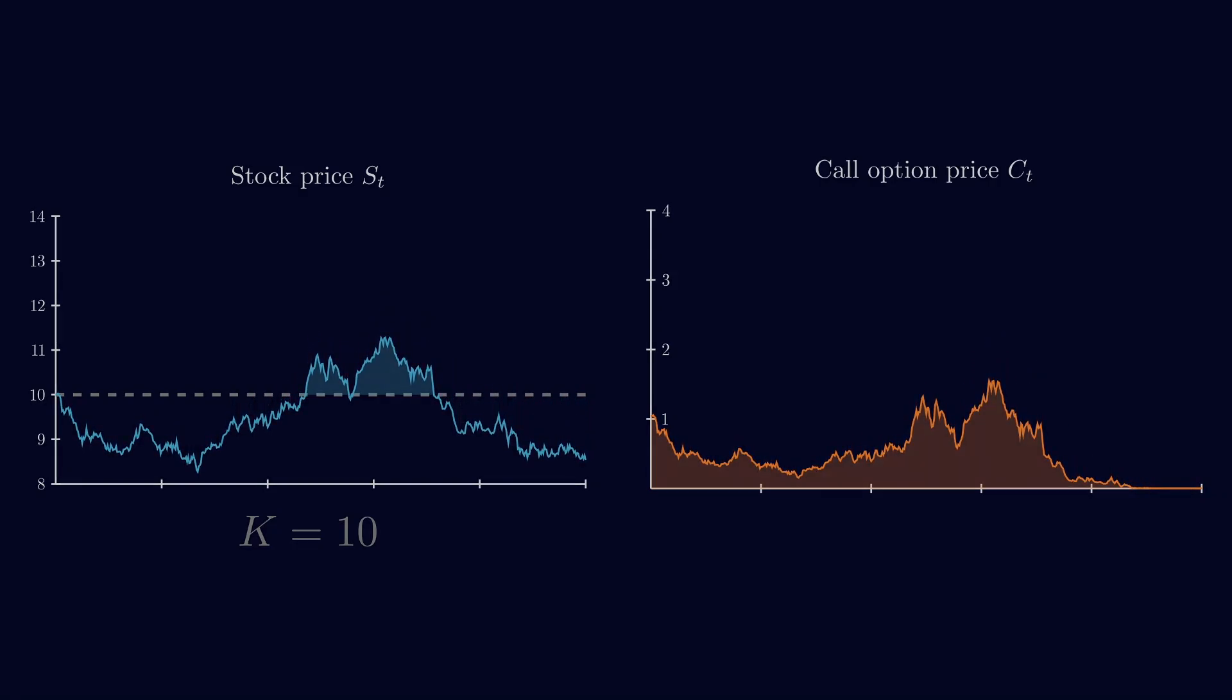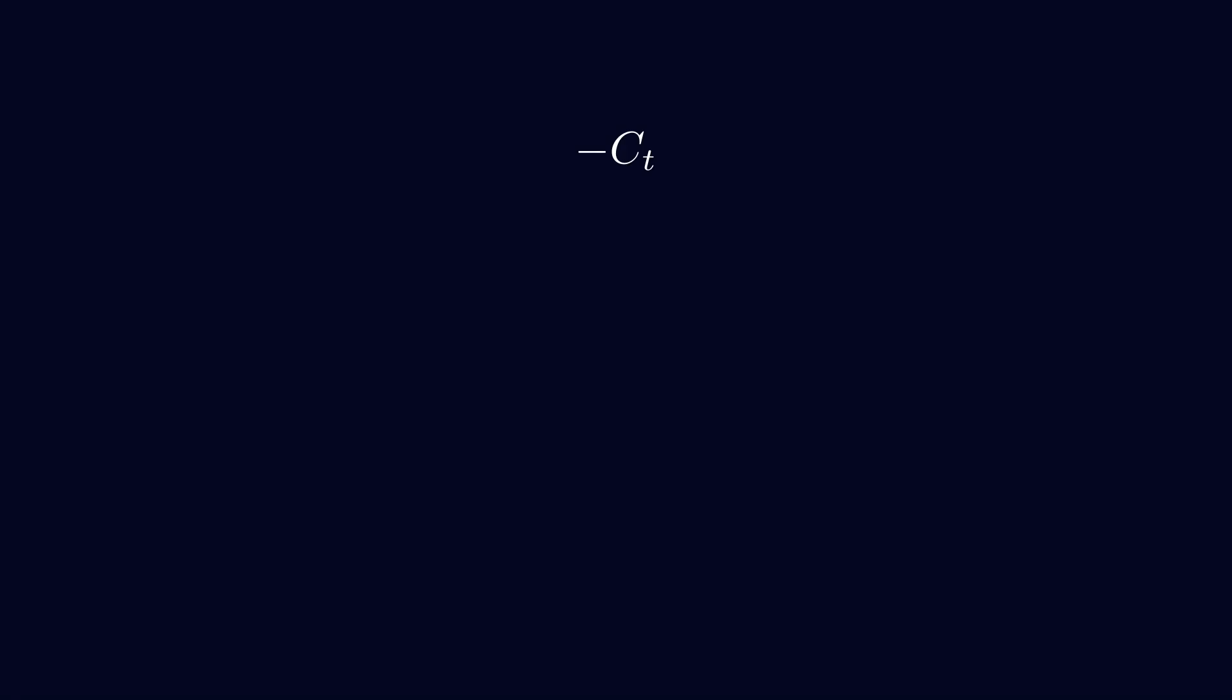Alright, so now I'd like to present an alternative way to think about the portfolio hedging strategy. Here is the idea. If you're shorting an option, meaning you're selling it, or more precisely, you're the one who issued it, then there's a risk involved. If the option ends up being profitable to exercise at maturity, which is called being in the money, you'll have to pay that amount to the person holding the option. So for you, this is a potential loss. You might need to spend money at the end. And we can think of this as a negative amount. Let's just call it minus C, with C being the option price.